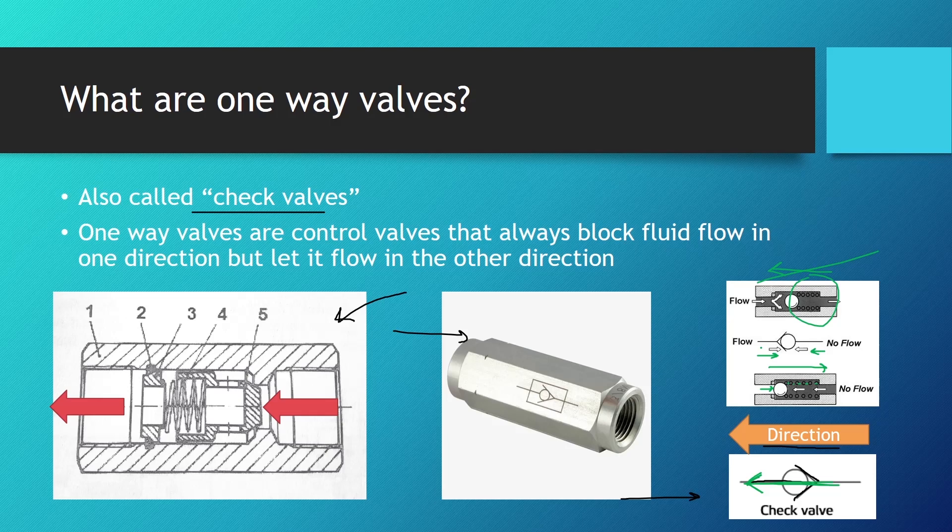One-way valves are used for preventing backflow. They are used as low pressure relief or filter bypasses. They are used when we have to hold loads with minimal leakage, and they are used for switching and sequencing. We will see one example at the end of the lesson.